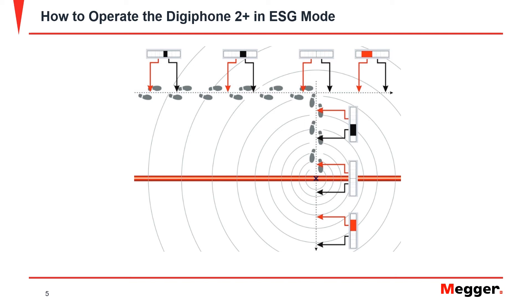Once the fault has been pinpointed, the location of the fault can be marked and the surge generator and the DigiPhone unit can be turned off. The cable is now ready for excavation and repair.